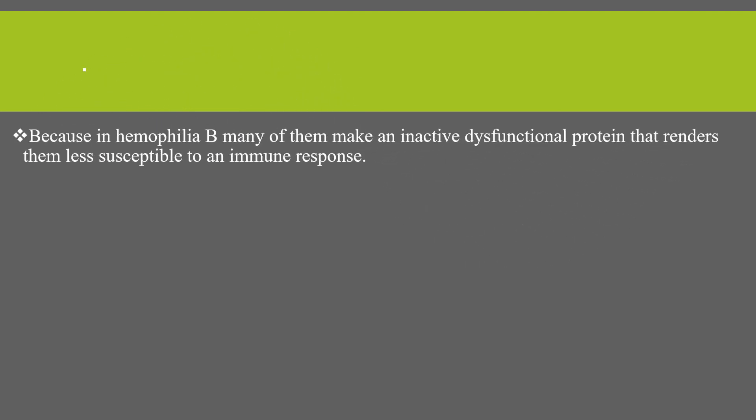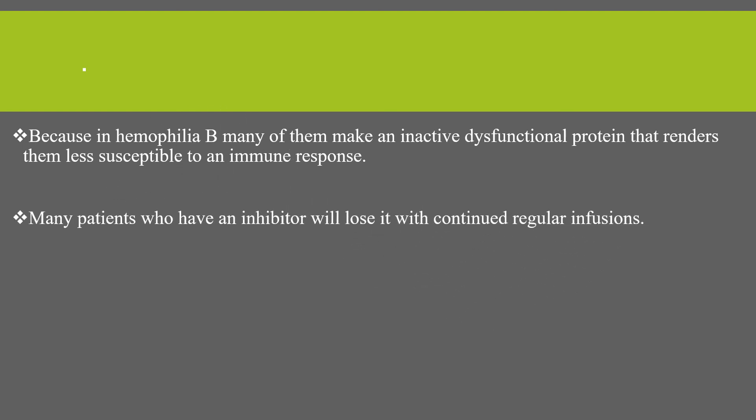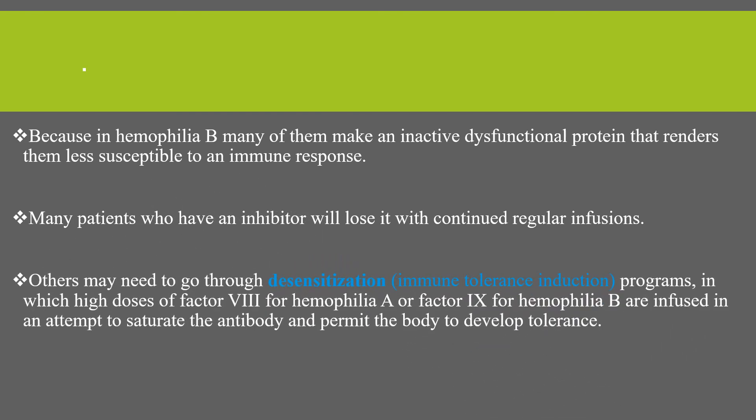Inhibitors are less common in hemophilia B because many hemophilia B patients make an ineffective or inactive dysfunctional protein, rendering them less susceptible to an immune response. Many patients who develop an inhibitor will lose it with continued regular infusion. Others may need to undergo desensitization — immune tolerance induction — in which high doses of factor 8 or factor 9 are infused in an attempt to saturate the antibody and permit the body to develop tolerance.